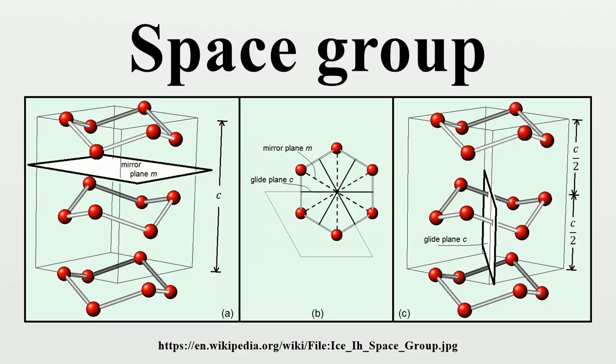In 3D there are 230 crystallographic space group types, which reduces to 219 affine space group types because of some types being different from their mirror image. These are said to differ by enantiomorphous character. Usually, space group refers to 3D. They were enumerated independently by Barlow, Fedorov and Schönflies.